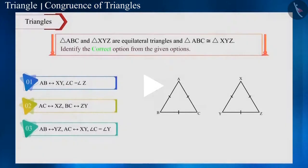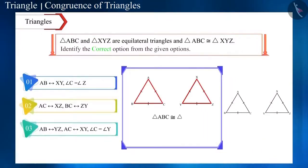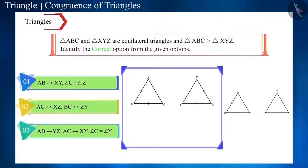Friends, these two triangles are equilateral triangles and all the sides and angles of equilateral triangles are equal. Also, these two triangles are congruent to each other. That is, any side of triangle ABC will be equal to all the sides of triangle XYZ and similarly, the angles of one triangle will be equal to all the angles of the other triangle. Therefore, all the given options are correct.